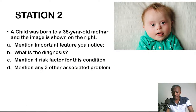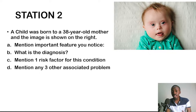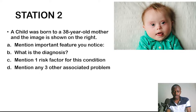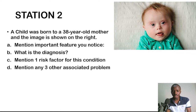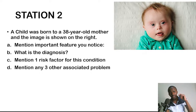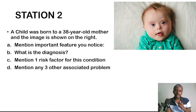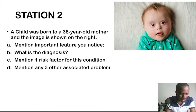It's never a pediatric OSCE without the next station's picture. Feel free to type questions in the chat — there may be some delay due to the stream. Station two: A child was born to a 38-year-old mother; the image is shown. Someone asked about TB meningitis — we're going for acute bacterial meningitis, not TB, because of the high percentage of polymorphonuclear cells.